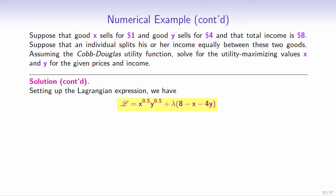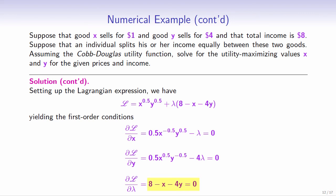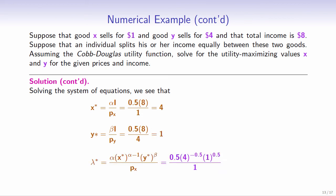Setting up the Lagrangian: L equals x^0.5 times y^0.5 plus lambda times (8 minus x minus 4y). The first order conditions are: 0.5 times x^(−0.5) times y^0.5 minus lambda equals 0; 0.5 times x^0.5 times y^(−0.5) minus 4 lambda equals 0; and 8 minus x minus 4y equals 0. Solving the system: x equals 0.5 times 8 over 1, which equals 4; y equals 0.5 times 8 over 4, which equals 1; lambda equals 0.5 times 4^(−0.5) times 1^0.5 all over 1, which equals 0.25; and utility equals 4^0.5 times 1^0.5, which equals 2.